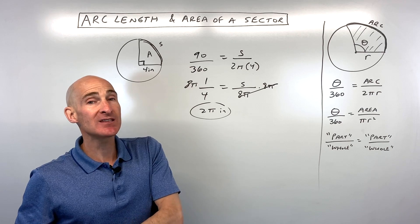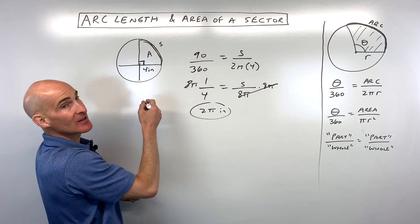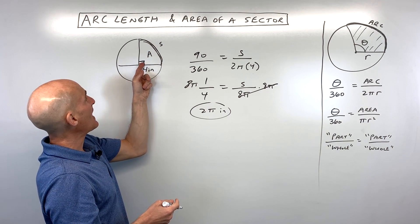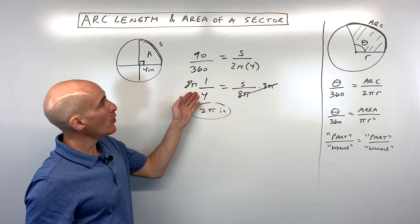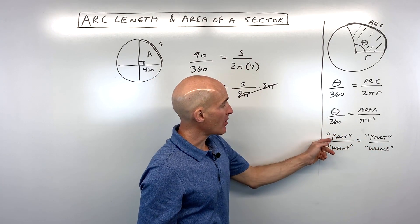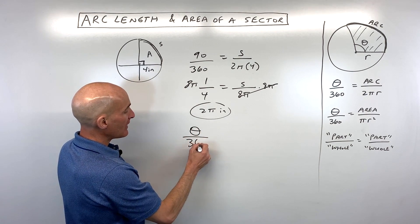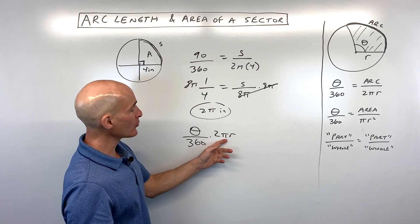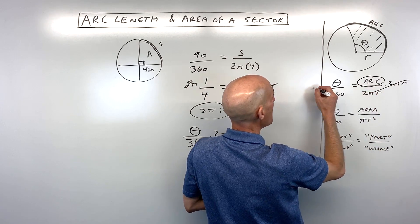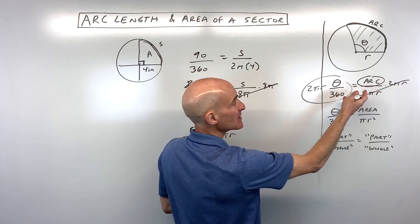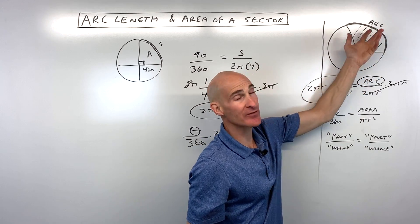That should make some intuitive sense because 90 degrees is like dividing into four pizza slices — 90 is one-fourth of 360, just like this arc is one-fourth of the whole circumference. This proportion method is like part to the whole equals part to the whole. Sometimes what students learn is the formula: theta divided by 360 times 2πr. All they're really doing is multiplying both sides by 2πr to solve for arc length — taking the fraction of the circle times the whole circumference gives you the arc length.